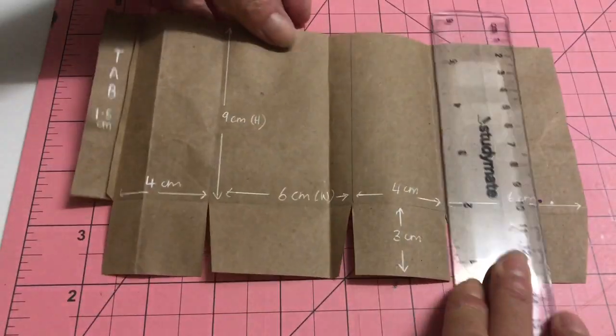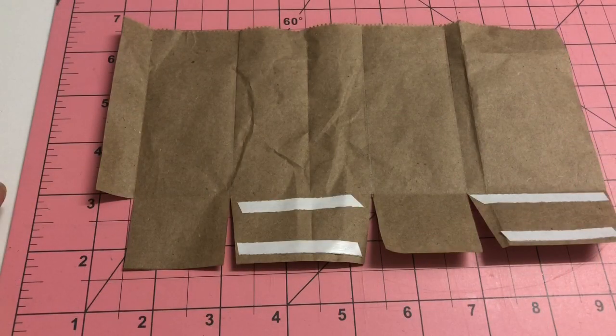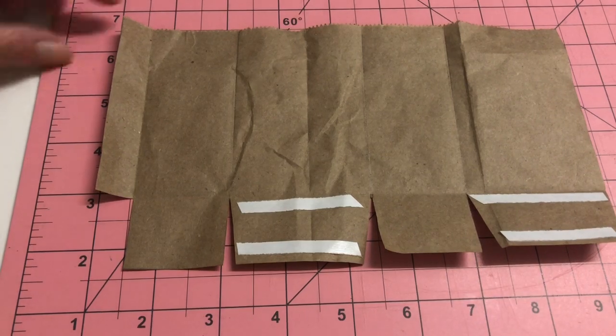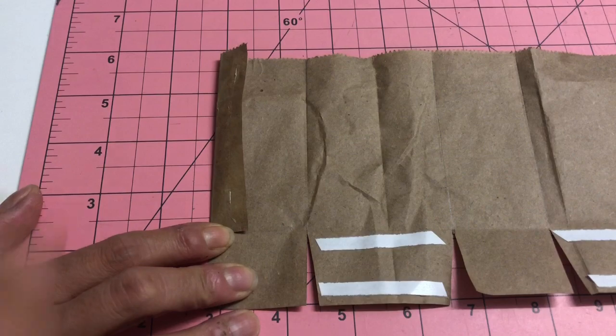Again, pre-fold all the sides and tabs. Flip the bag over and apply glue to the two longer tabs and the side left tab. Join the bag together as shown.